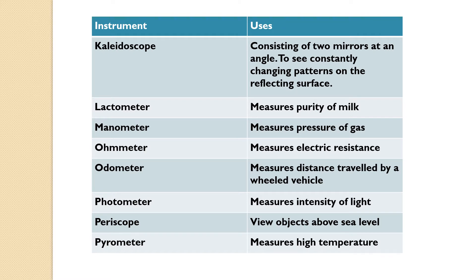Odometer measures distance traveled by a wheeled vehicle. Photometer is to measure the intensity of light. Periscope view objects above sea level. Pyrometer is to measure high temperature.